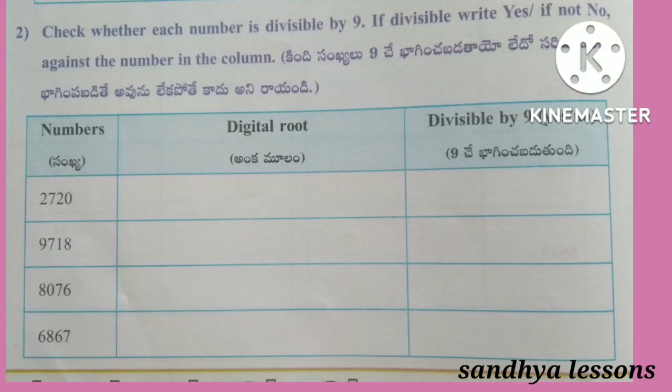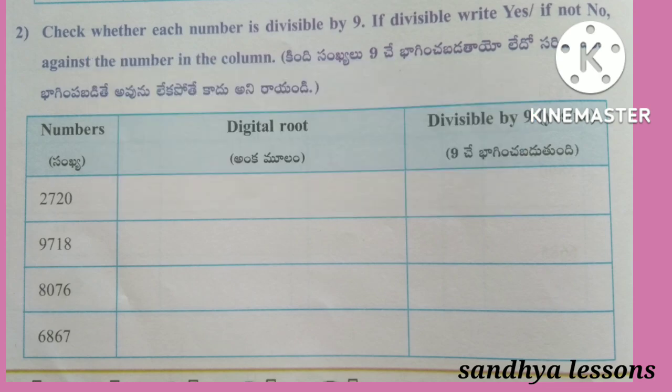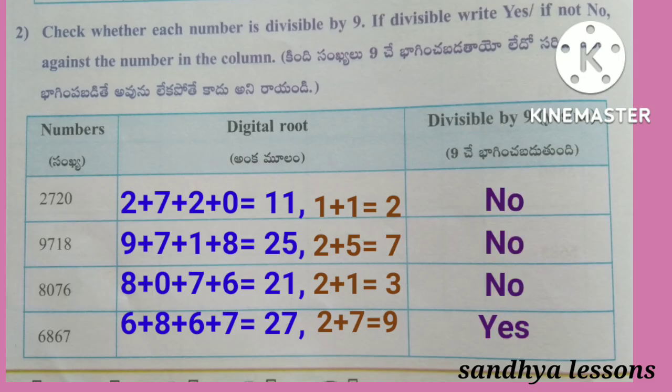Second Roman: Check whether each number is divisible by 9. If divisible, write yes; if not, no. The divisibility rule of 9 is: if the digital root of the number is 9, then the number is exactly divisible by 9. The digital root of 2,720 is 2 — not divisible by 9. Digital root of 9,718 is 7 — not divisible by 9. Digital root of 8,076 is 3 — not divisible by 9. Digital root of 6,867 is 9 — divisible by 9.